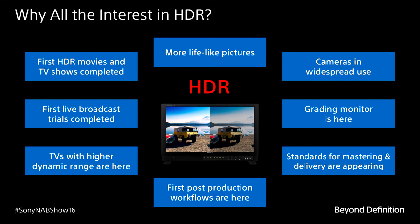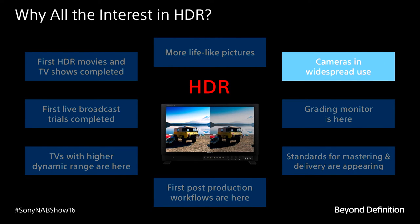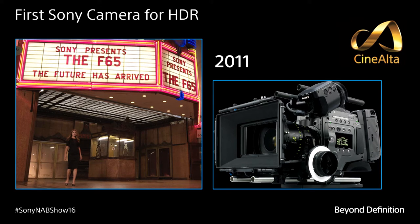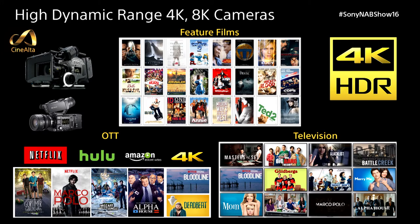Let me walk you through some of the reasons why HDR is now becoming more real and creating a lot more interest. First, the introduction of very wide dynamic range cameras is becoming very real. Sony introduced about five years ago the very first wide dynamic range camera for electronic cinematography — the F65 with an 8K sensor — which has about 15 stops of dynamic range and has been used in a number of very famous movies recently. Not only the F65, but also the F55 has that capability, for feature film production, over-the-top streaming content, as well as for television.